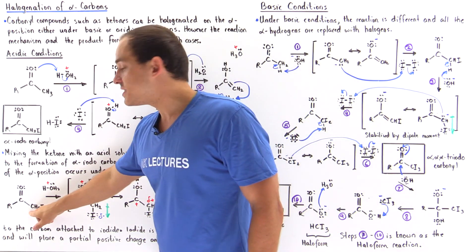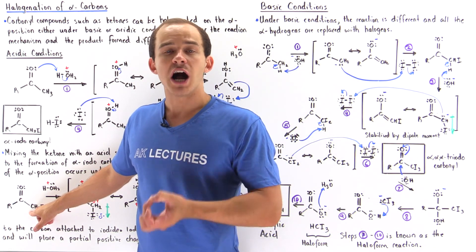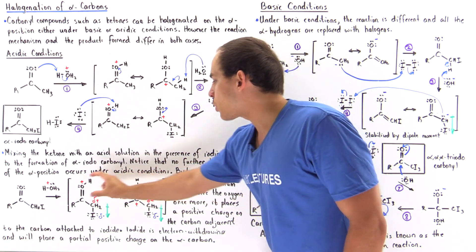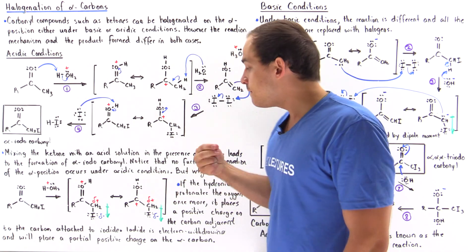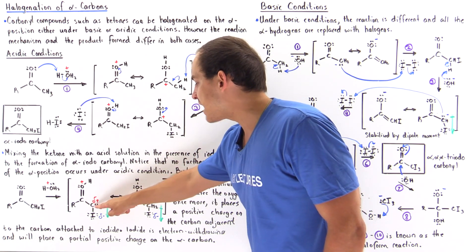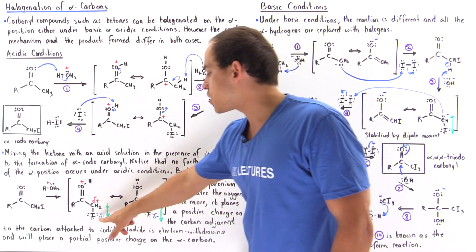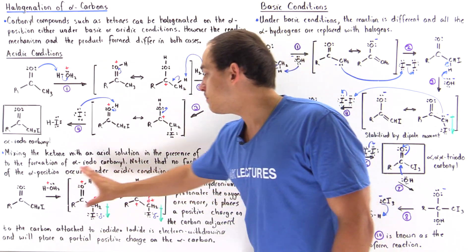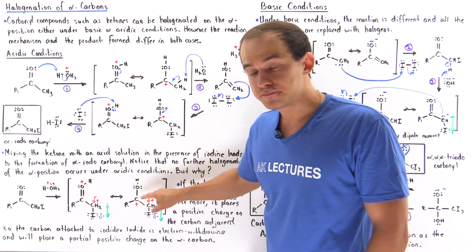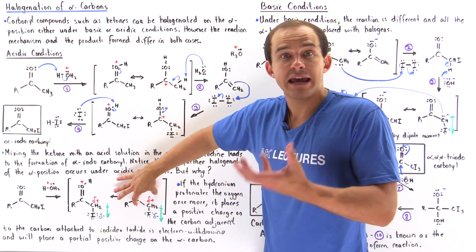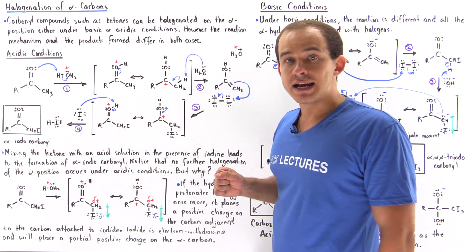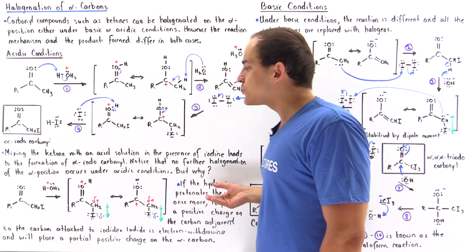When the hydronium protonates the oxygen and we form this resonance-stabilized intermediate, there will be a relatively large electric dipole moment placing a partial positive charge on the alpha-carbon and a partial negative charge on the iodide. When this intermediate is formed, one of these resonance structures has a full positive charge on the carbon. So we have two positive charges right next to one another, which greatly destabilizes this intermediate — that is exactly why this reaction does not take place.